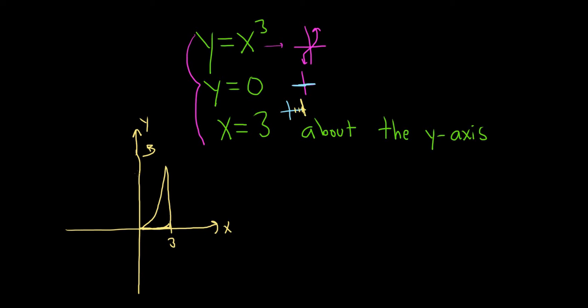So when we're using the shell method and we draw our rectangle, our rectangle should always be parallel to the axis of revolution. So our rectangle will look something like this. In the shell method, there are two important things to identify, h and p.